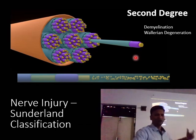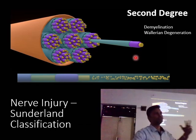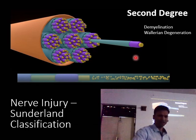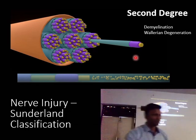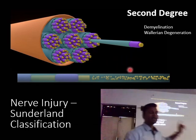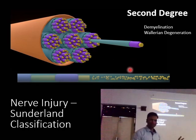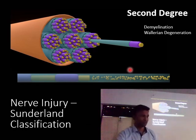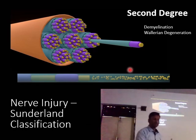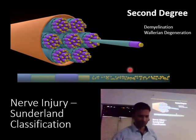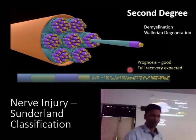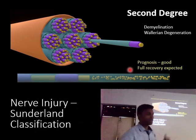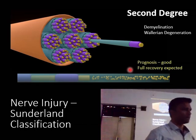In second degree nerve injury, we see demyelination along with Wallerian degeneration. Again, the endoneurium remains intact, although the axon and myelin sheath are damaged. Because the endoneurium is intact as a guide, the prognosis is very good and full recovery is expected within three to six months.